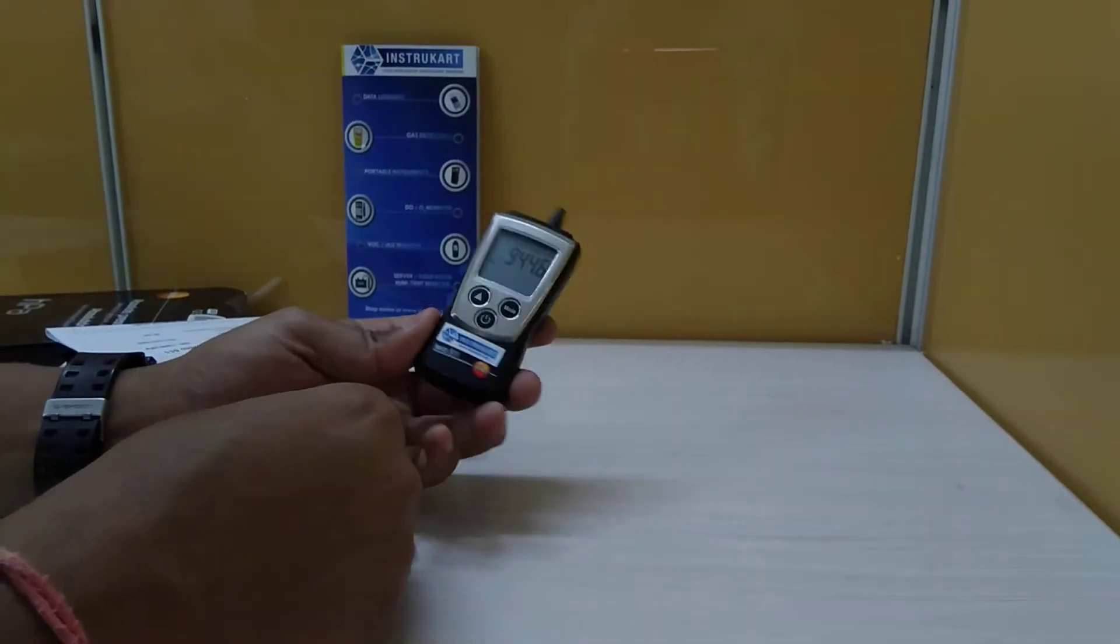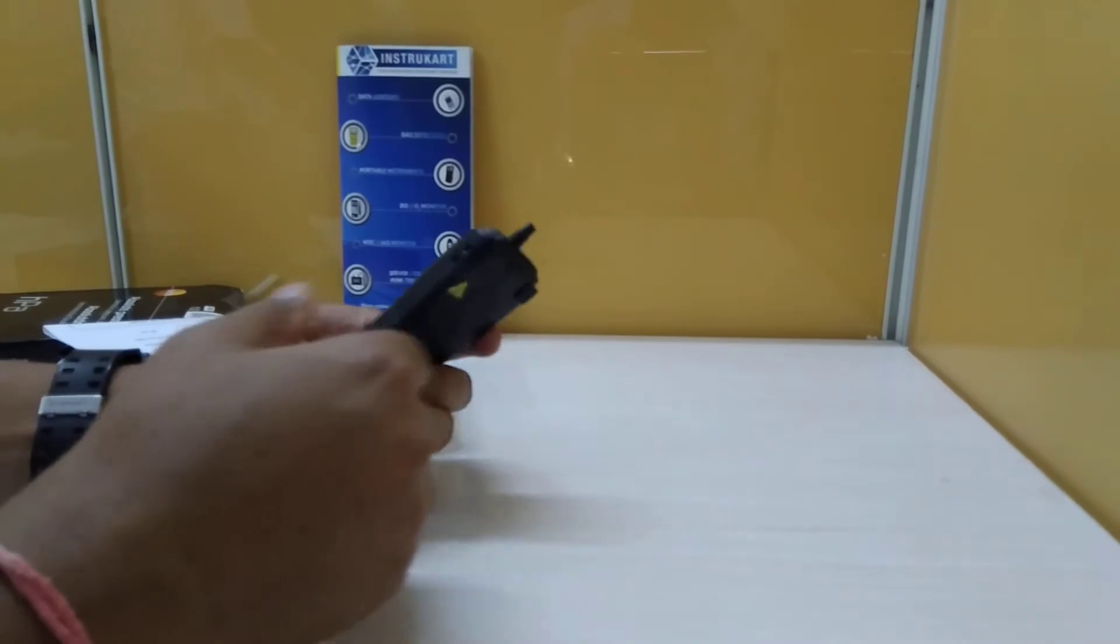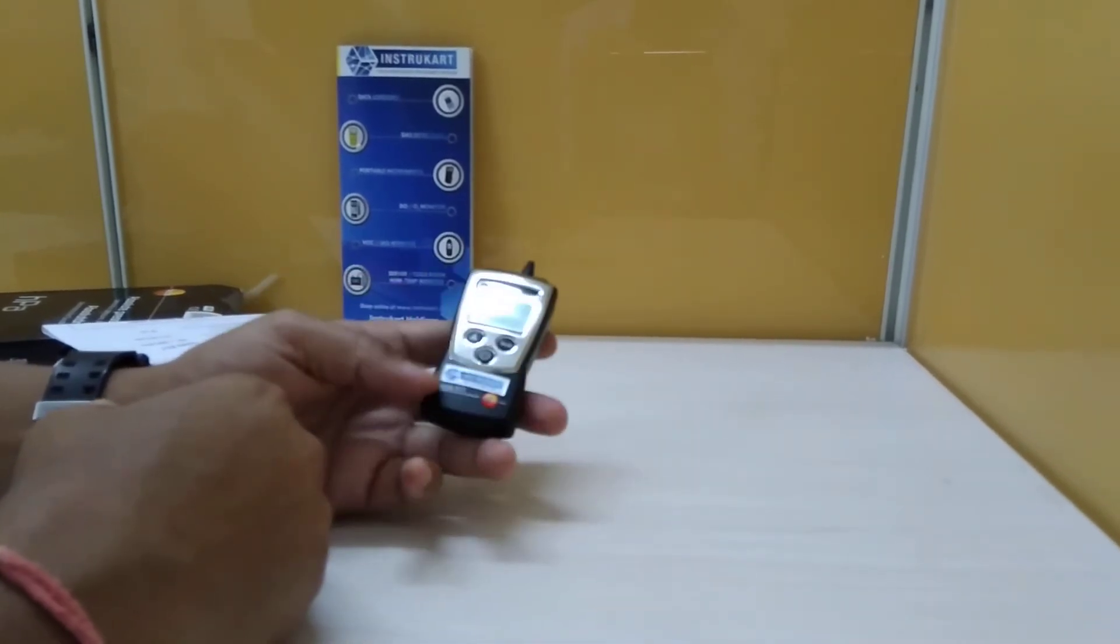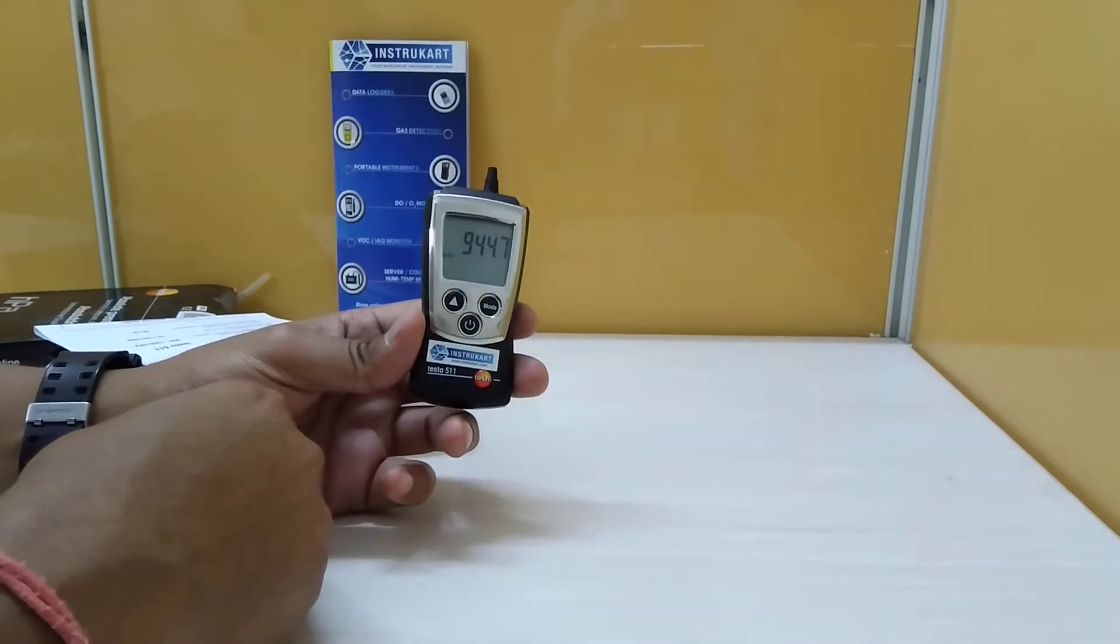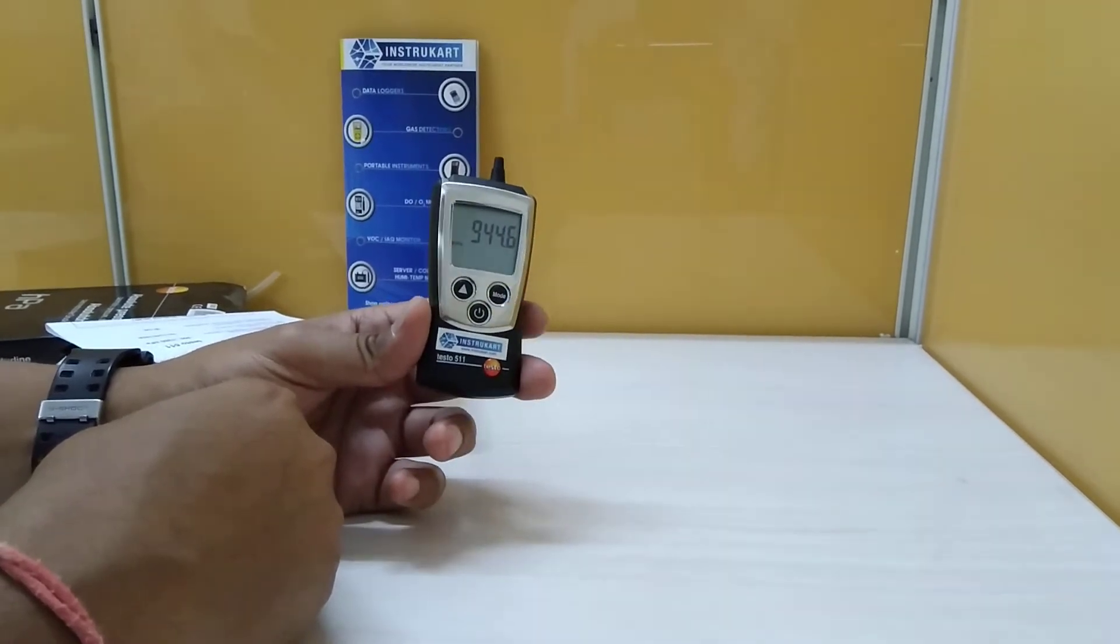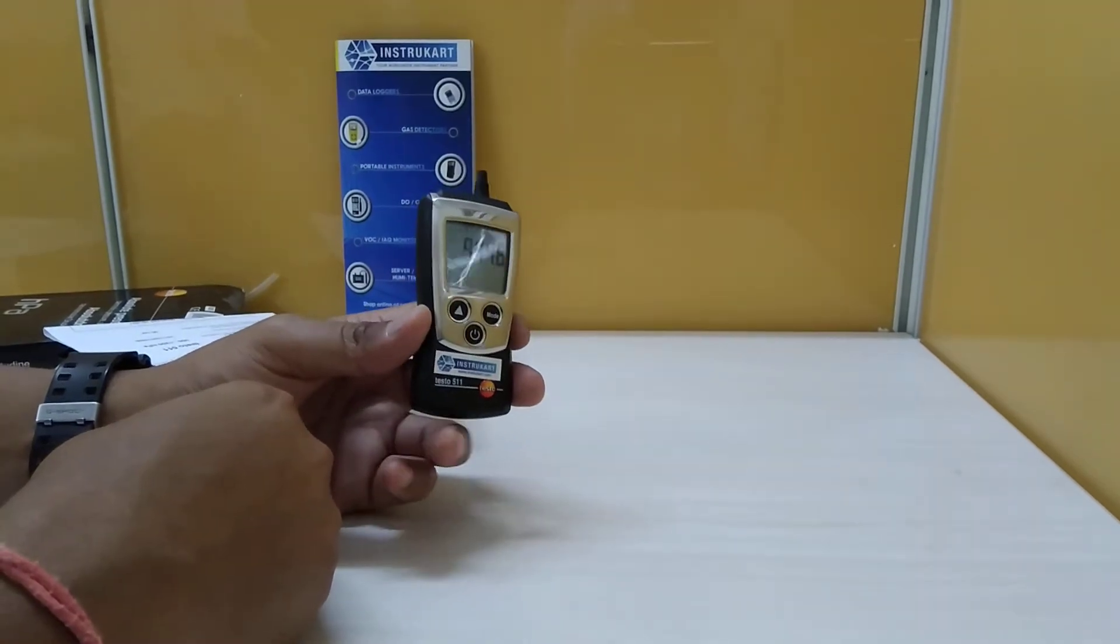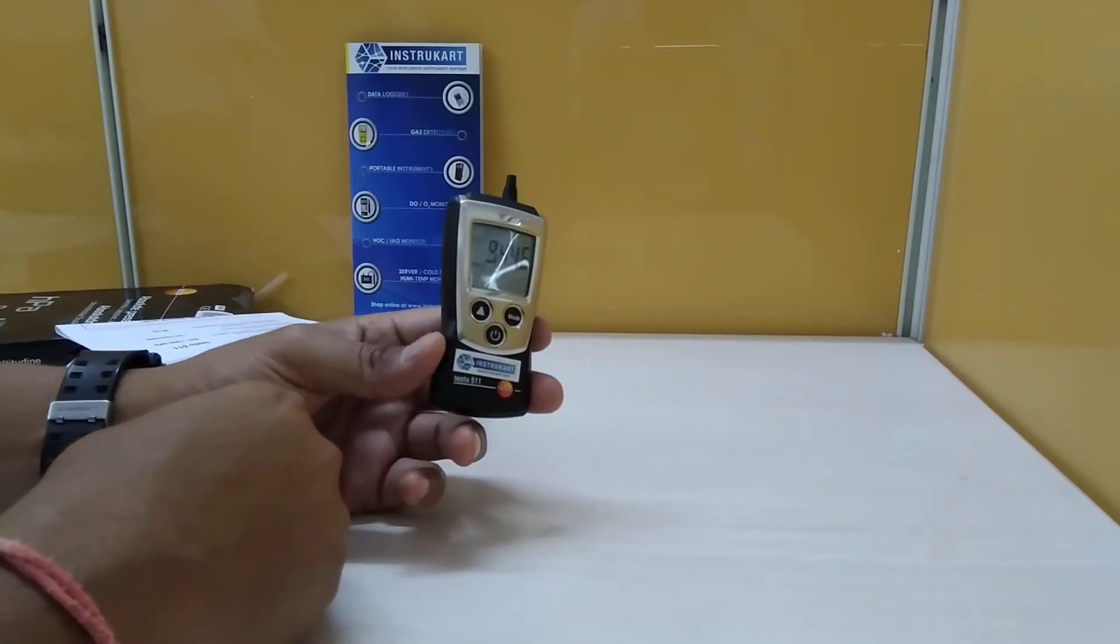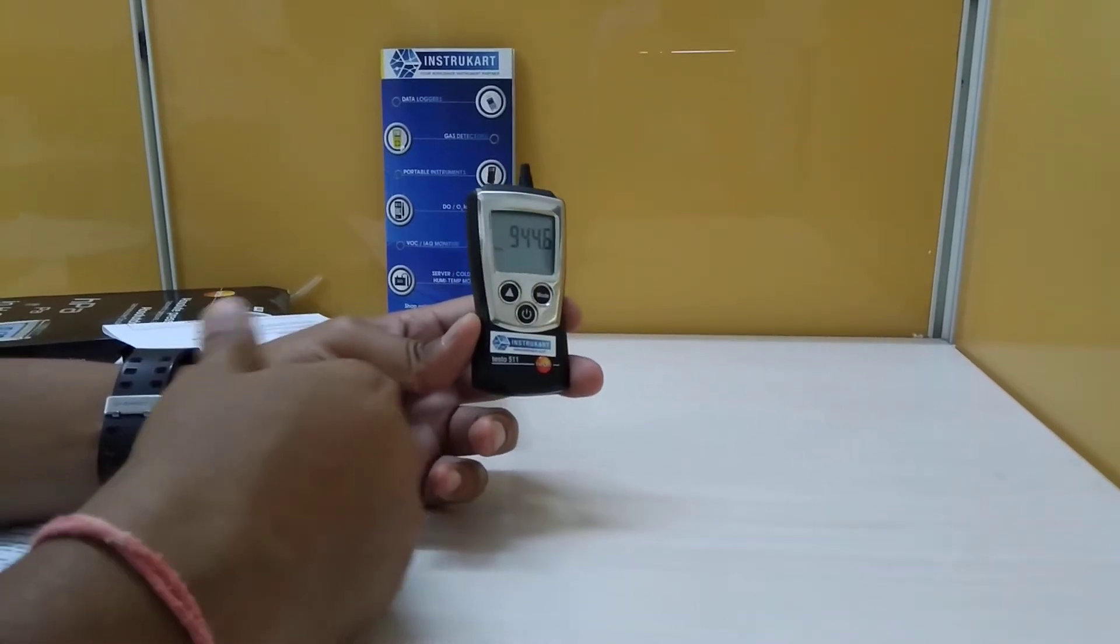The accuracy for this instrument is approximately plus or minus 1 digit at nominal temperature of 22 degrees Celsius, and plus or minus 3 hPa, or plus or minus 1.2 inches of H2O.